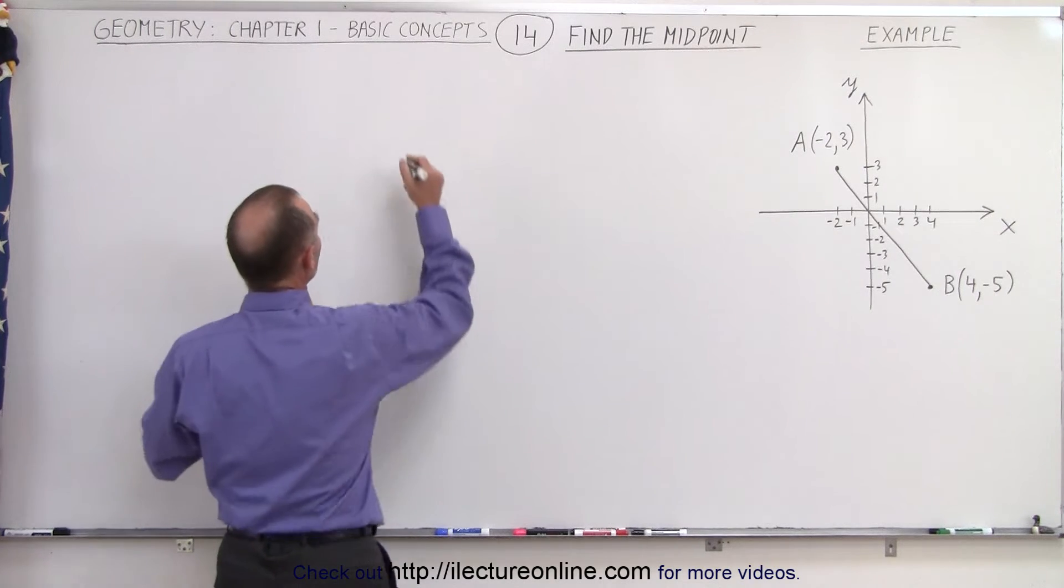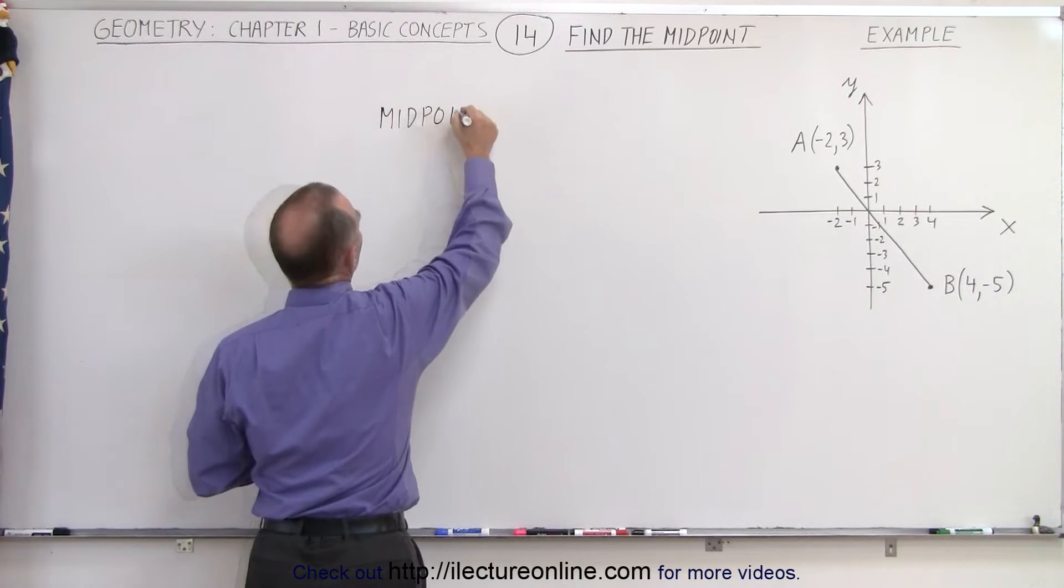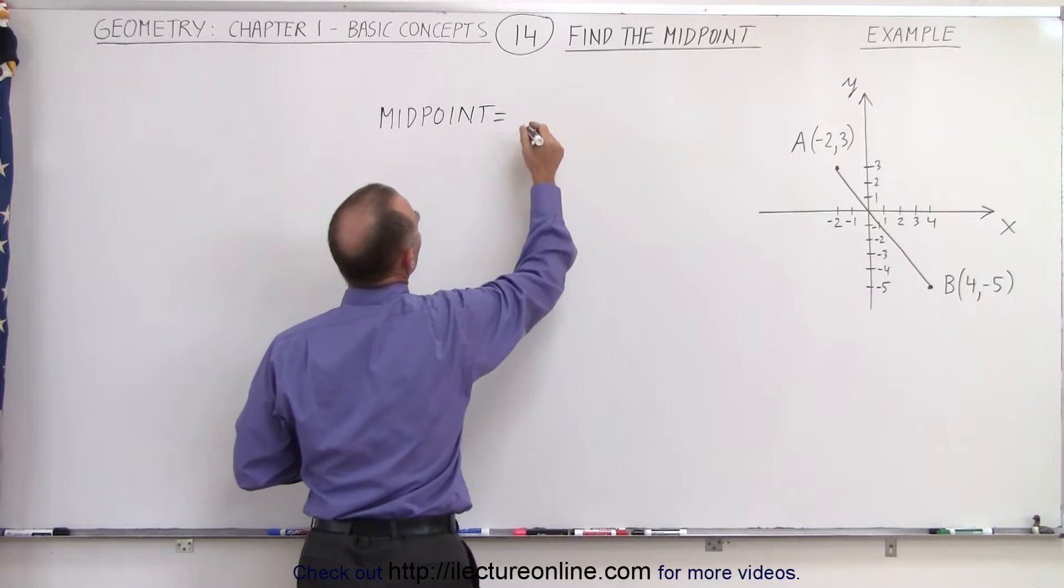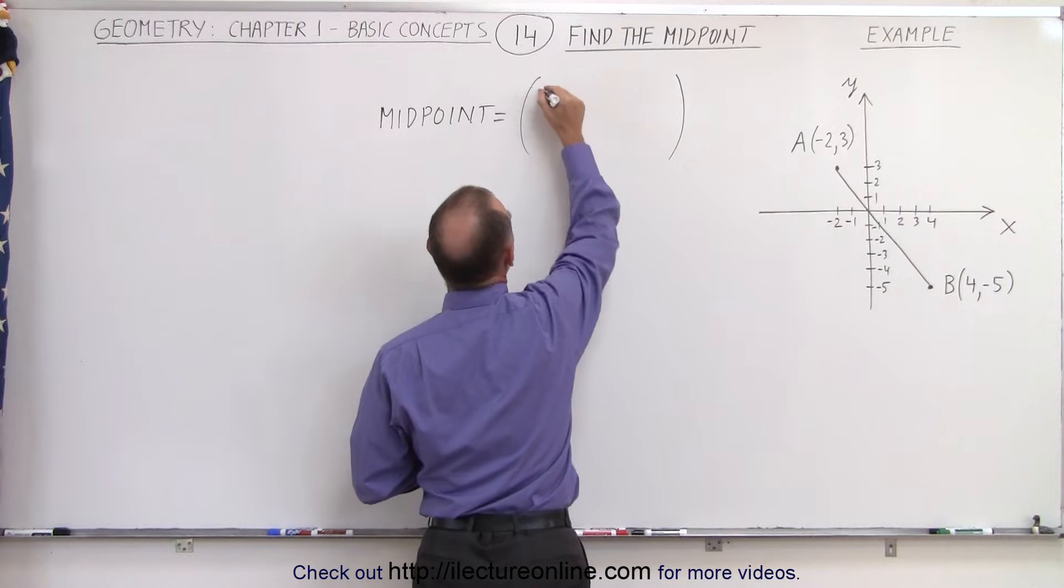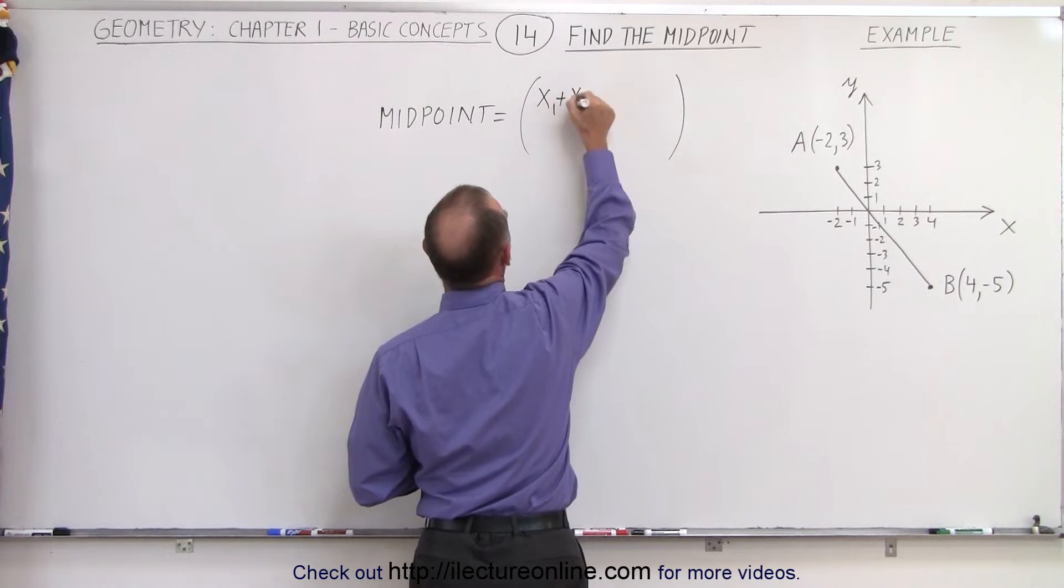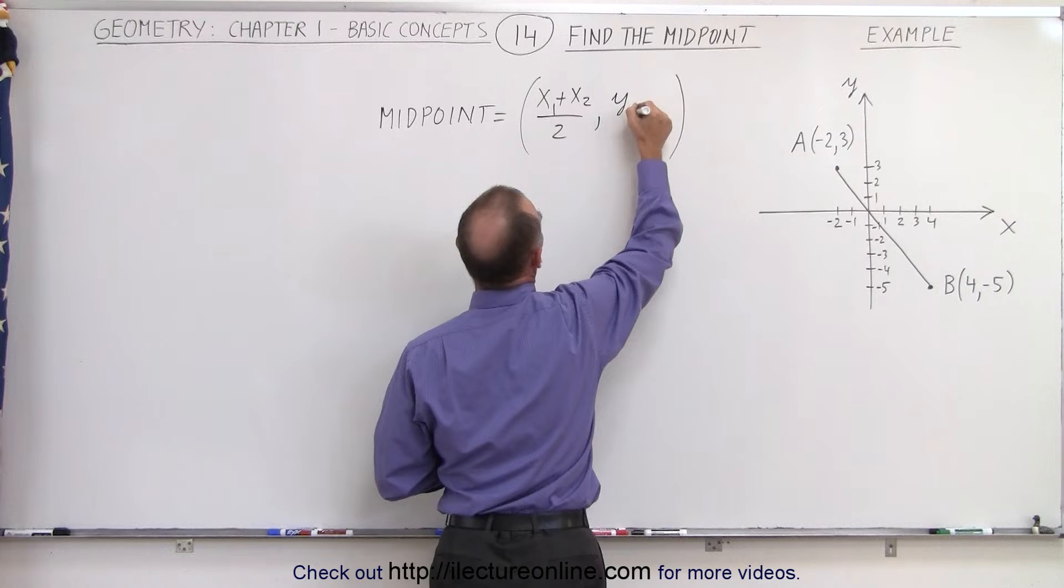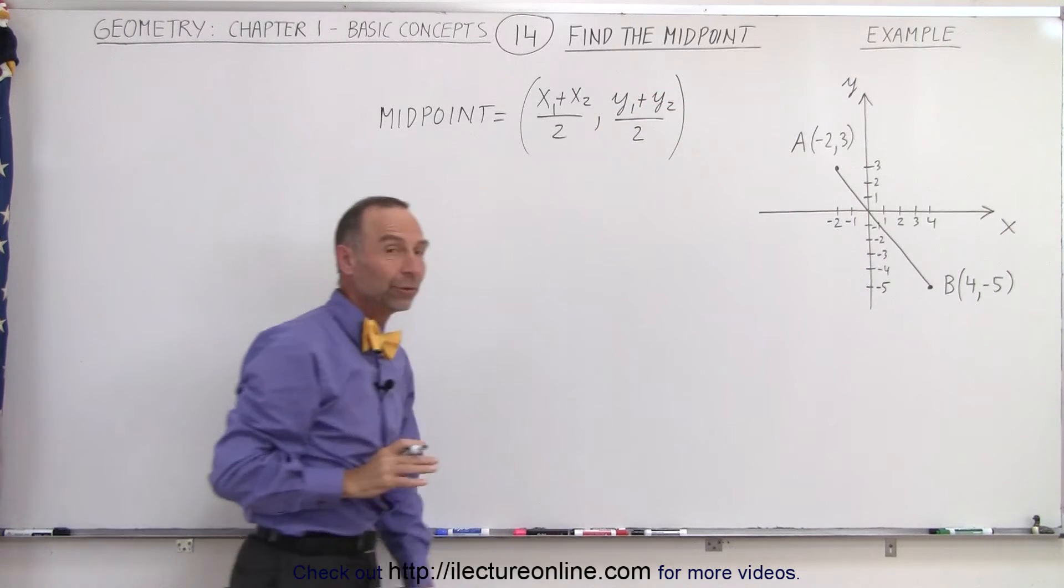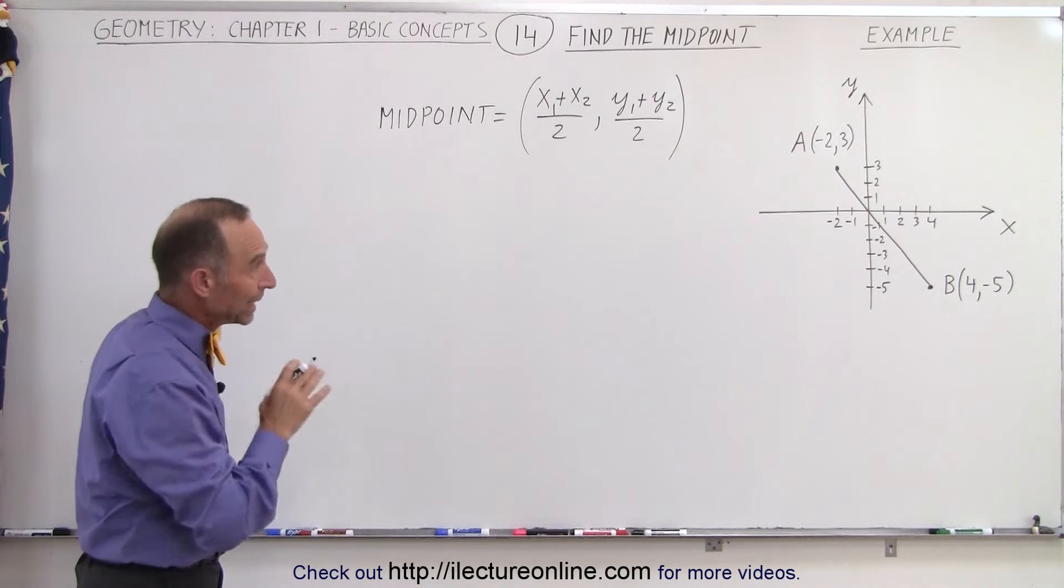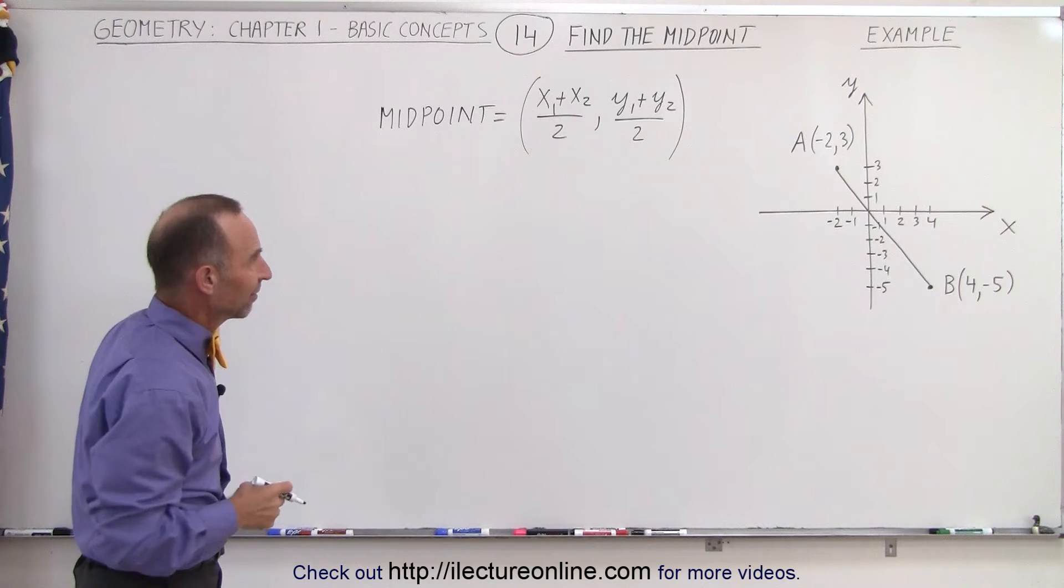And the equation we need to use to find the midpoint can be written as follows. Midpoint is equal to the two coordinates, the x and the y coordinates, which can be written as x1 plus x2 divided by 2 and y1 plus y2 divided by 2. That's how we're going to find the midpoint between A and B on the line segment AB.